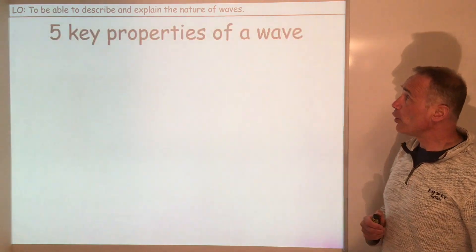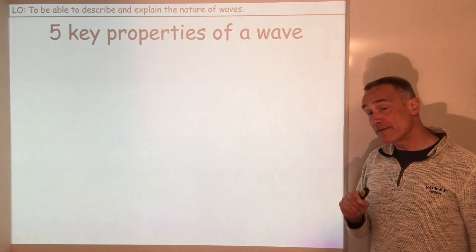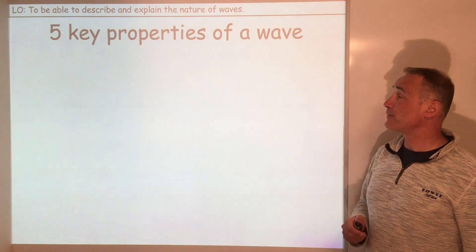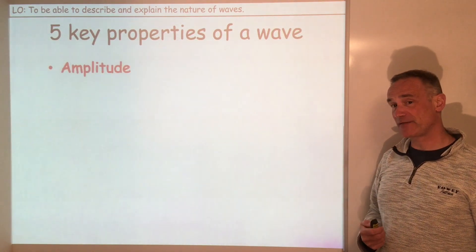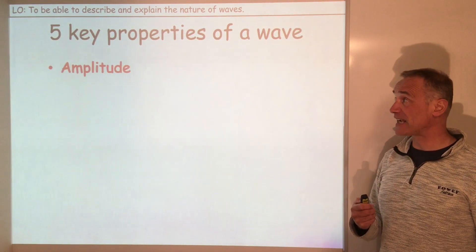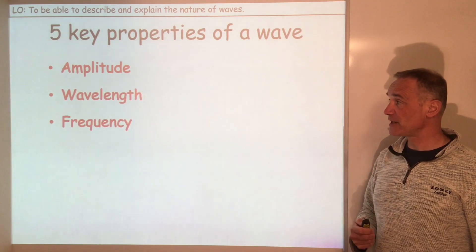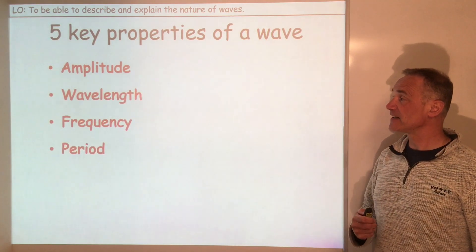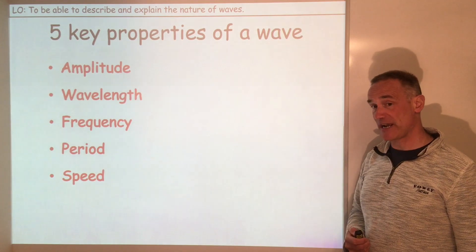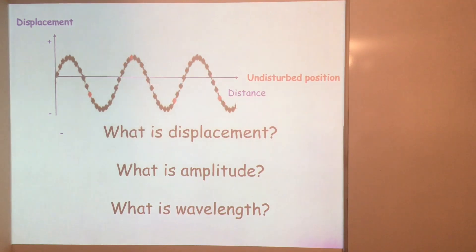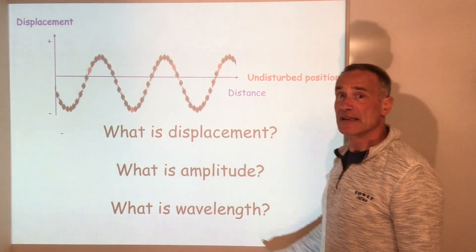So, onto our next section. We need to know the five key properties of a wave — we can look at each one individually. We can look at amplitude, wavelength, frequency, period, and speed of a wave.